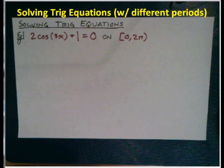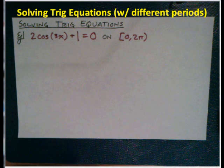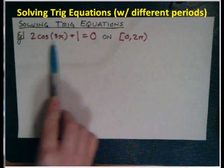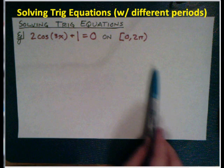Okay, welcome back. Last thing I want to cover before I hit the sack is I want to go through a problem where the period's different, where we have these extra solutions because there's something else that's happening. So here's the equation we're going to go through. We've got 2 cosine of 3x plus 1 equals 0. We're again on 0 to 2 pi.